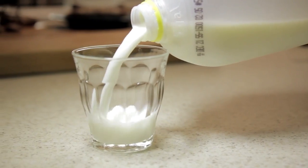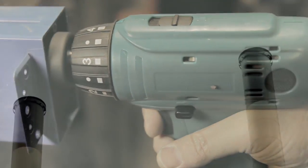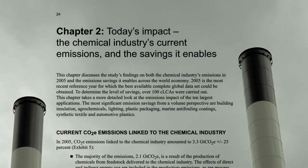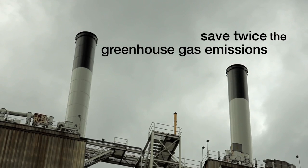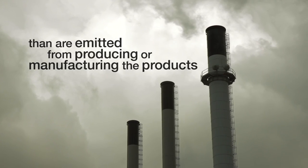Increased use of products derived from chemistry would reduce greenhouse gases. A groundbreaking study found that products of chemistry save twice the greenhouse gas emissions than are emitted from producing or manufacturing the products.